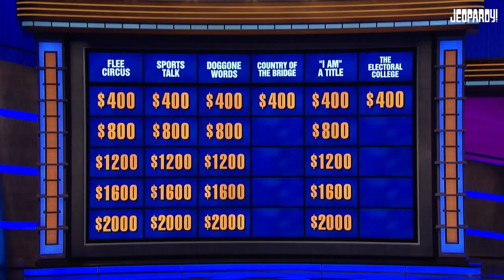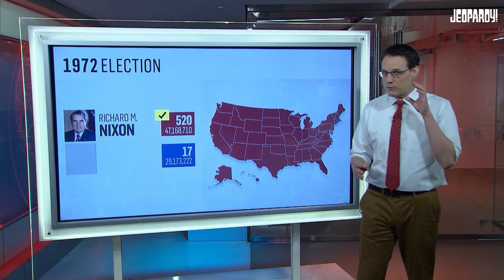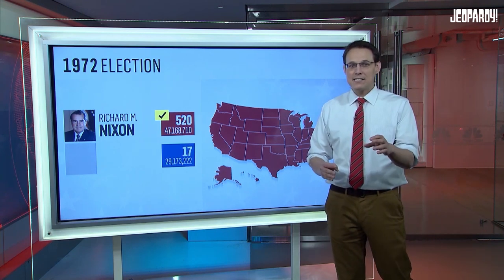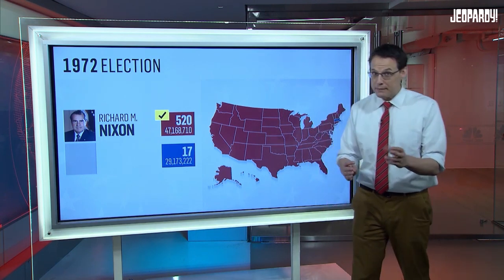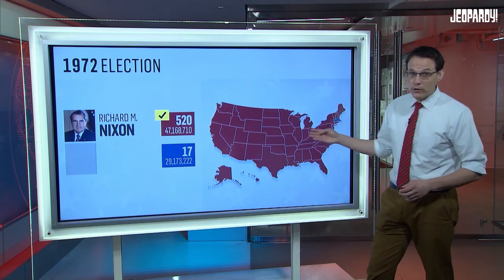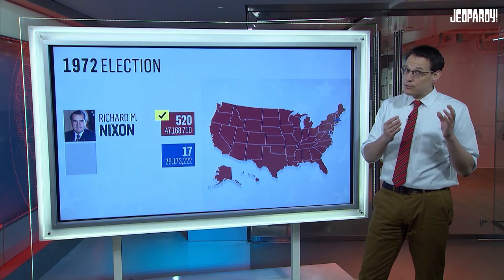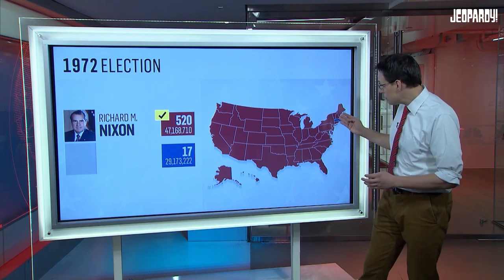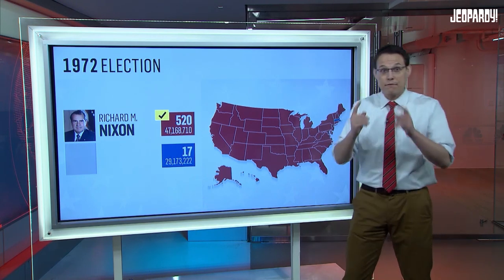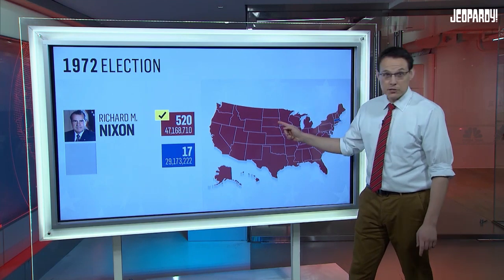Electoral College, $400. 1972 was one of the biggest landslides in Electoral College history, as Republican incumbent Richard Nixon piled up 49 states. And this anti-war Democratic senator captured only Massachusetts and the District of Columbia, failing to carry even his home state of South Dakota. Ben: Who is McGovern? McGovern is right.